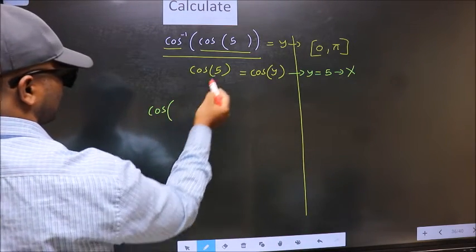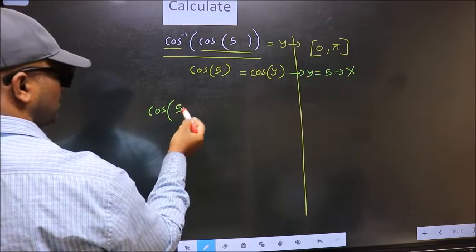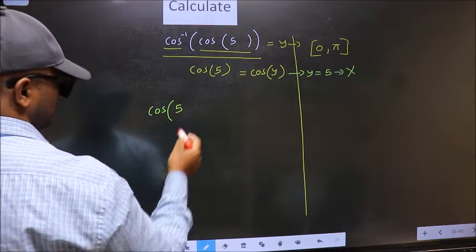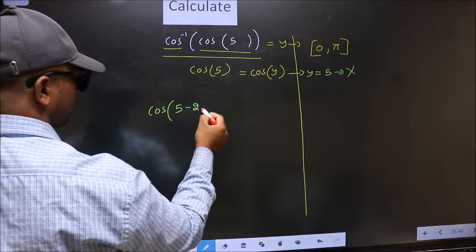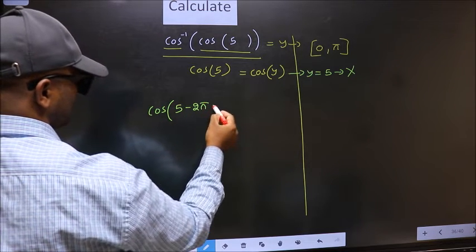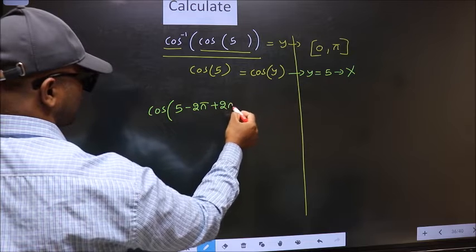Cos 5 exceeds that interval. So we should decrease it. To decrease I subtract 2 pi. Now whatever we are subtracting we should also add the same thing.